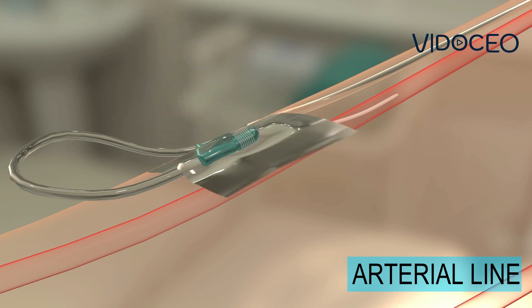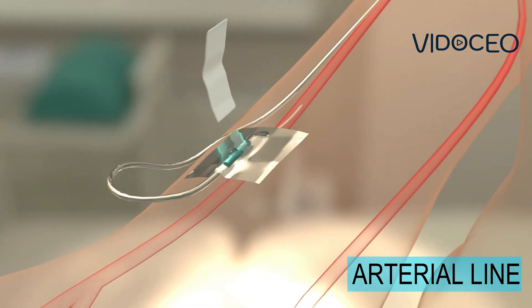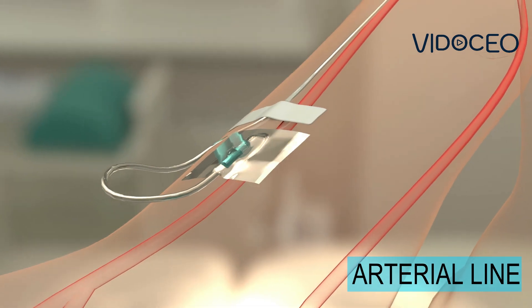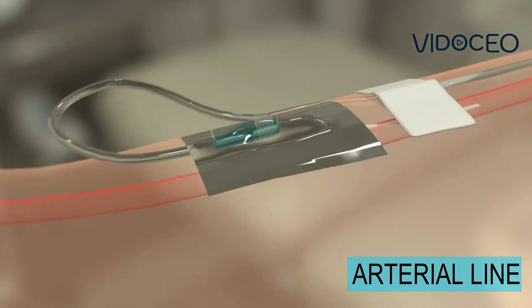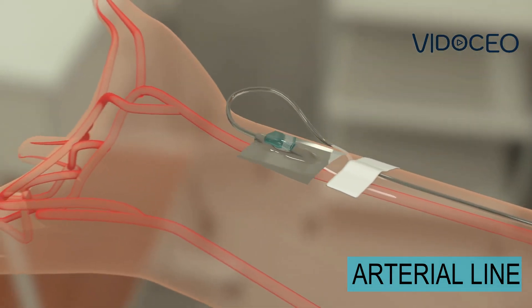In order to read the blood pressure from the catheter, a line that looks like an IV line is hooked up to the catheter. The catheter and monitoring lines are secured with sterile dressings and tape.